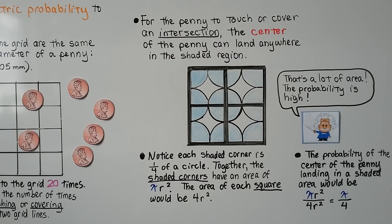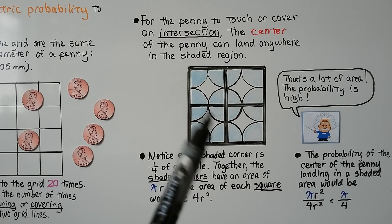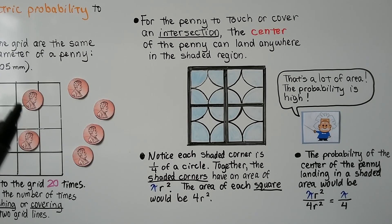The area of each square would be four r squared. Now that's a lot of area. So the probability is going to be high that our penny is going to land touching or covering an intersection. And the probability of the center of the penny landing in a shaded area would be pi r squared over four r squared. These cancel out, so we just have pi over four.